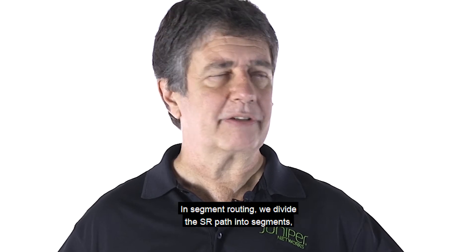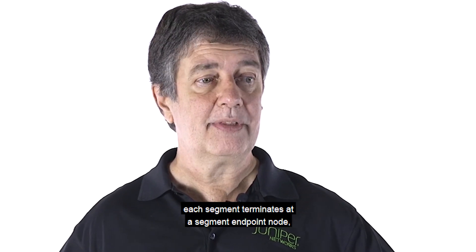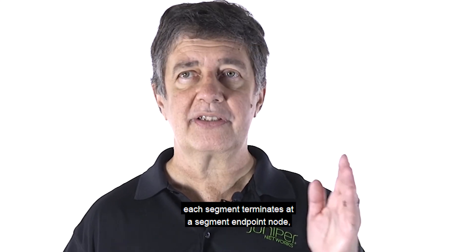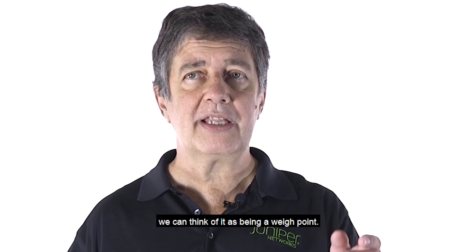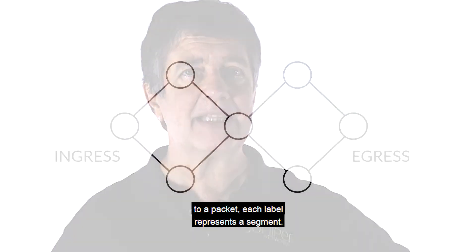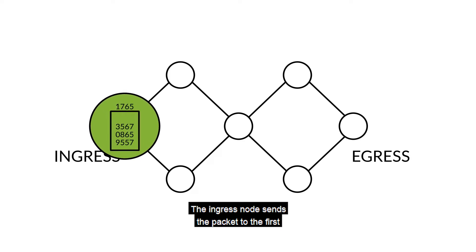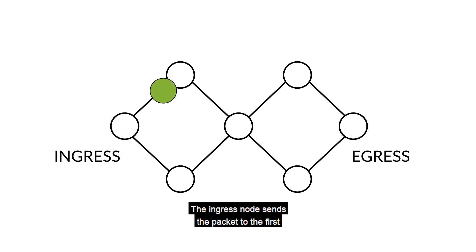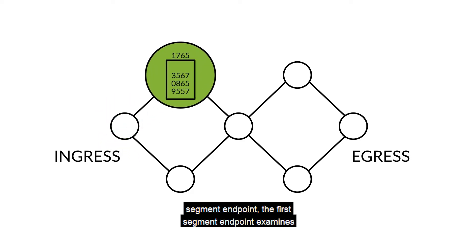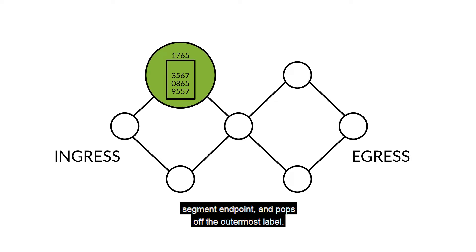Let's compare this to segment routing. In segment routing, we divide the SR path into segments. Each segment terminates at a segment endpoint node — we can think of it as being a waypoint. The segment ingress node prepends many labels to a packet; each label represents a segment. The ingress node sends the packet to the first segment endpoint, which examines the outermost label, processes it, sends it on to the next segment endpoint, and pops off the outermost label.